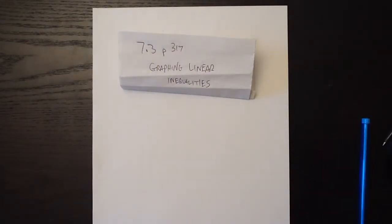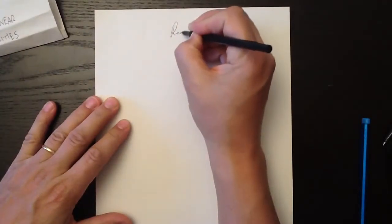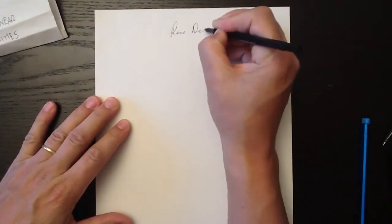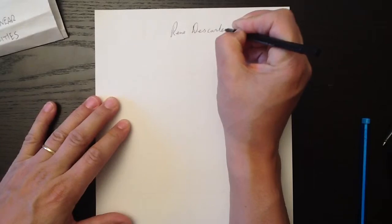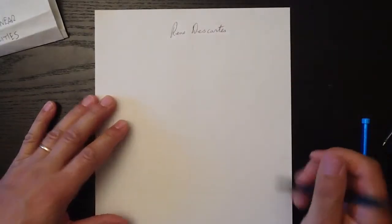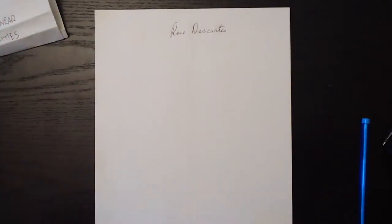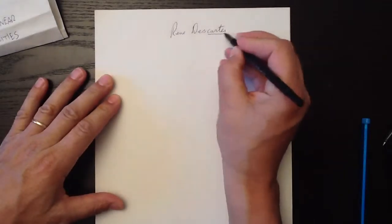Way back when in the social studies days there was this guy named René Descartes. René Descartes was a French guy and he came up with this idea that you could map out your mathematics on what he called the Cartesian plane.